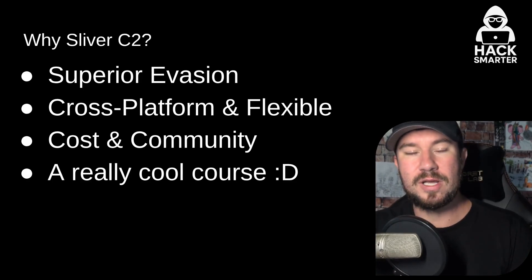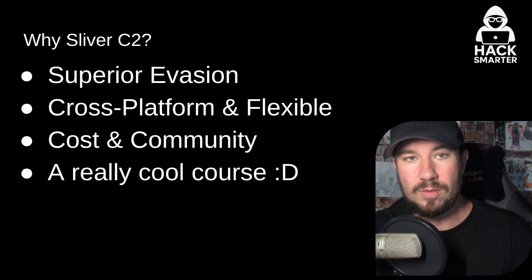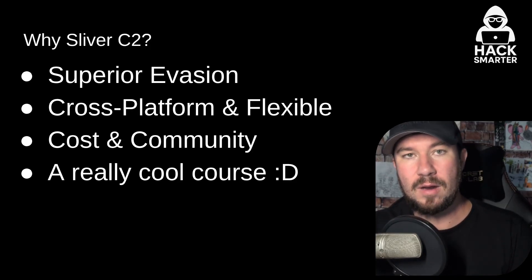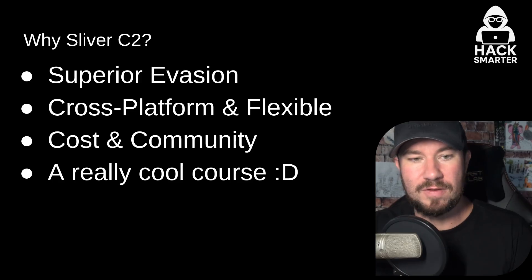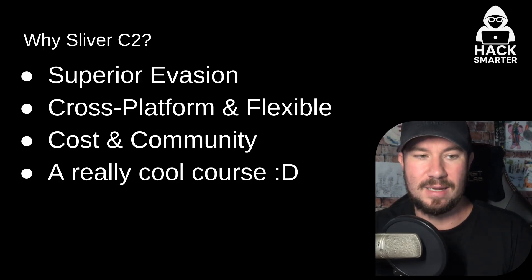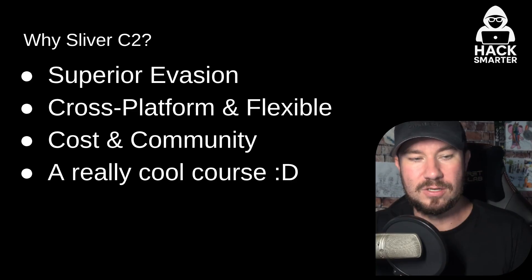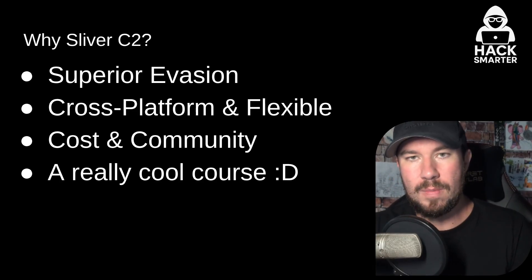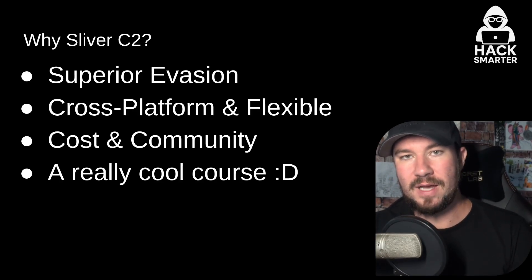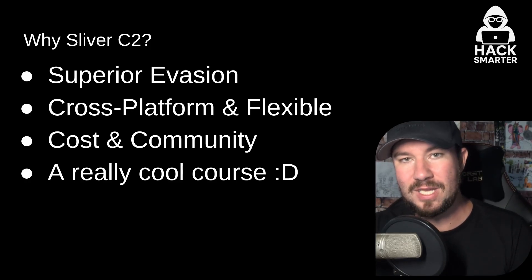A second reason it has superior evasion is it's written in the Go language. Unlike C# or Python, which often rely on well-known interpreters or runtimes, a Go binary is self-contained — it avoids the use of reflected loaders or .NET assemblies. Number three, it has built-in OPSEC features. It does API unhooking and direct syscalls. If that doesn't mean anything to you right now, that's okay — we'll talk more about it later in the course. When it comes to EDR evasion, AV evasion, and evading the blue team and SOCs, Sliver C2 is an excellent choice.